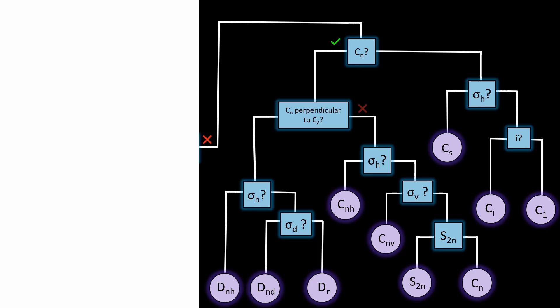But if there is no perpendicular C2 axis, we're in the cyclic or C groups. If it has a horizontal mirror plane, it's CnH, for example cis-dichloroethene. If it has a vertical mirror plane, it's CnV, for example ammonia.